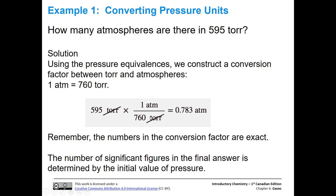When we do that math, 595 divided by 760, we get 0.783 atmospheres. This is the unit left over after we do our conversion. Remember that these numbers in the conversion factor are exact. In these gas conversion problems between various units of pressure, we use the number of sig figs in the initial pressure. In this case, there are three sig figs, so we have three significant figures in our answer.